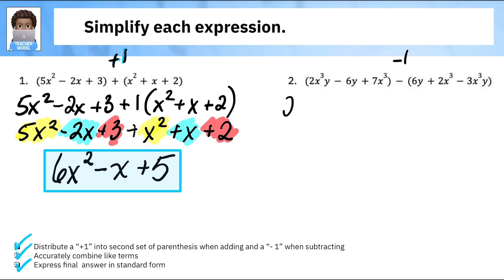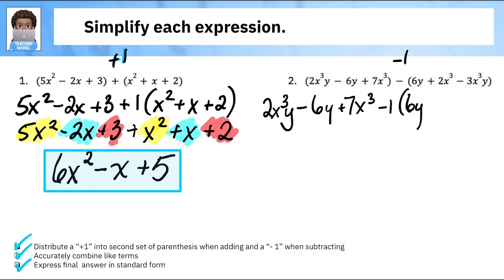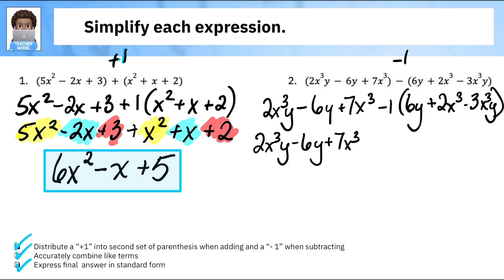Let's go to the next one. We have our negative one, so we know the first set stays the same. Because I'm distributing by a negative one, the signs are going to change to their opposites. Where I have a positive 6y, it turns into negative 6y. Where I have a positive 2x to the third power, now I have negative 2x to the third power. And where I have negative 3x cubed, now I have positive 3x cubed y.